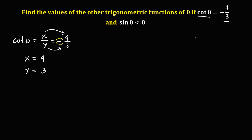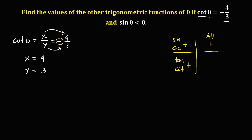Since we have a negative value, one of these variables is negative. In quadrant 1 all functions are positive; in quadrant 2 only sine and cosecant are positive; in quadrant 3 only tangent and cotangent are positive; in quadrant 4 only cosine and secant are positive. From the condition that sine theta is less than 0, sine theta is negative.